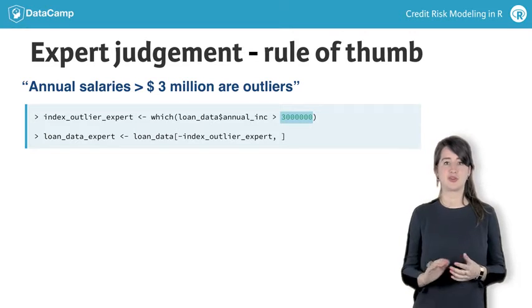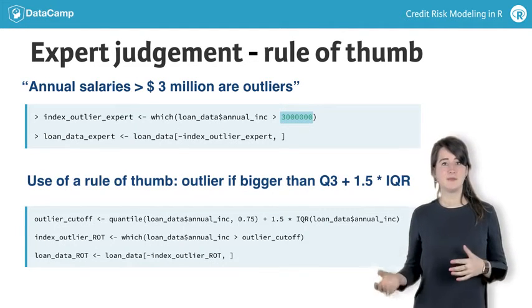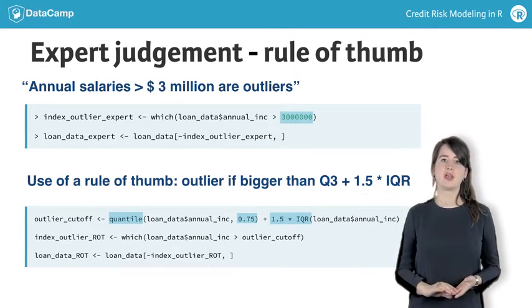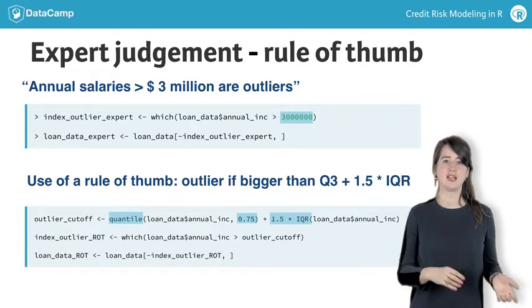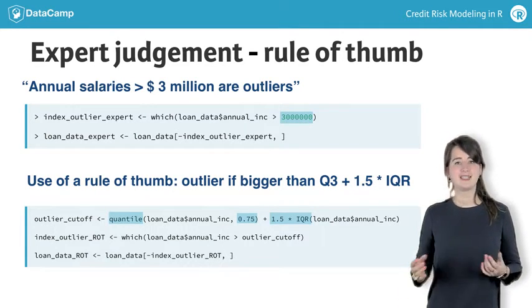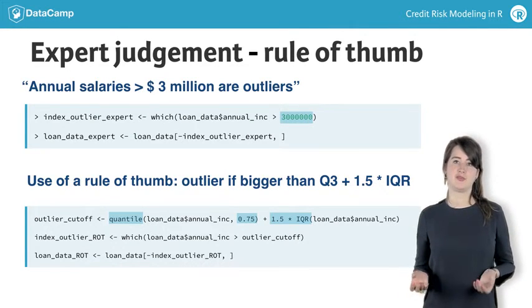If a data scientist wants to rely on a rule of thumb, he could delete all values that are bigger or smaller than 1.5 times the interquartile range, which is the range between the first and third quartiles of the variable's distribution. As outliers in the negative range did not occur here, we only delete ones in the positive range.